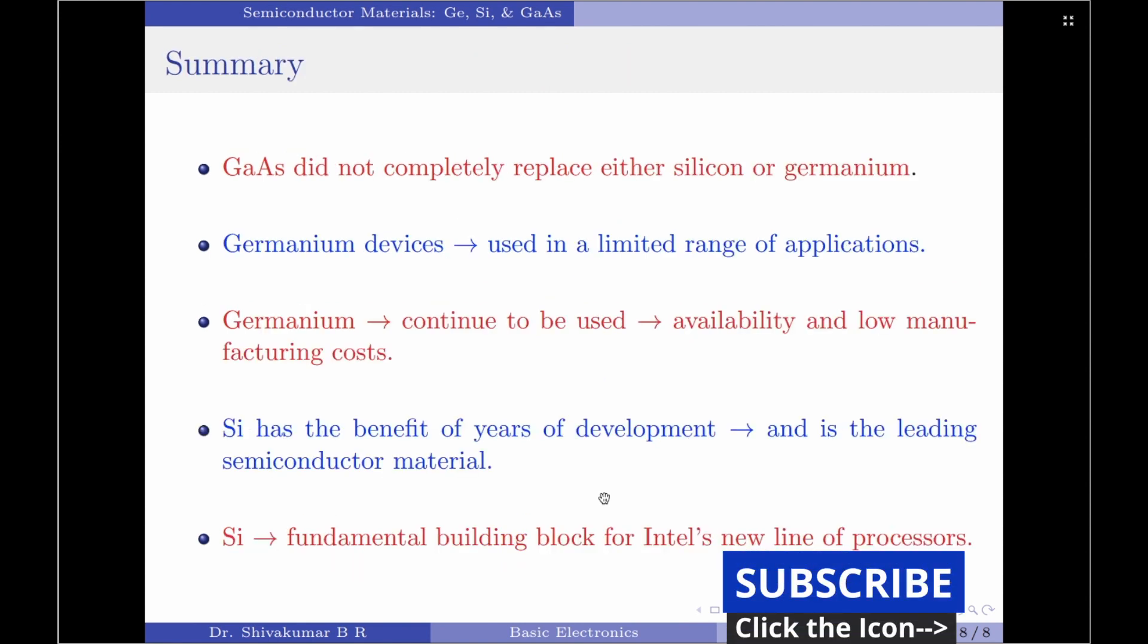That was about a very brief discussion on semiconductor materials. Let us now summarize our discussion. We just learned that gallium arsenide had speeds of operations five times that of silicon. Does it mean gallium arsenide has completely overtaken the electronics industry and replaced both silicon or germanium? Strangely, no.